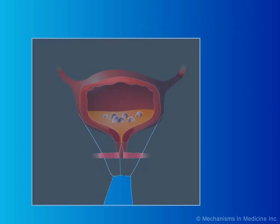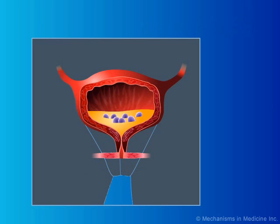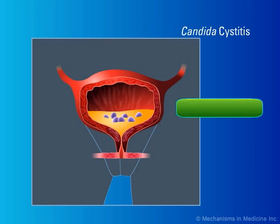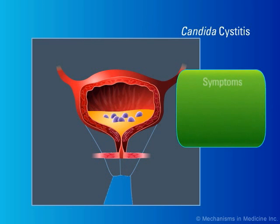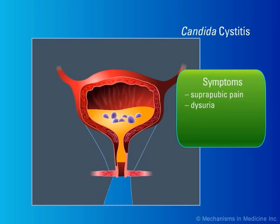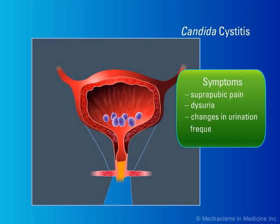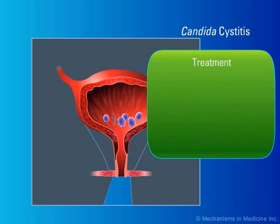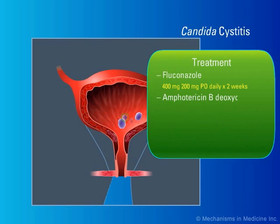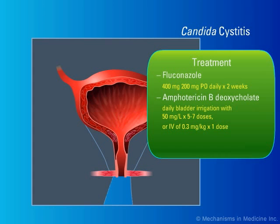Alternatively, patients may suffer from symptomatic lower urinary tract infection, candida cystitis. Symptoms of candida cystitis are suprapubic pain and dysuria, plus changes in urination frequency and urgency. Candida cystitis can be treated with fluconazole orally, amphotericin B deoxycholate bladder irrigation or IV, or flucytosine orally.